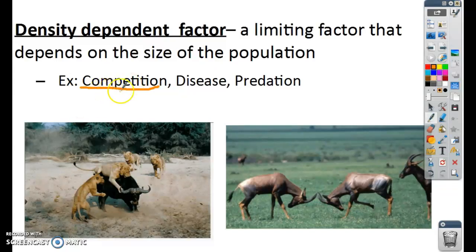So the amount of competition depends on how great the density is or how big the population is. With disease, think about it. If we have 100 people in a room, all tightly packed together, and one person has the flu, how fast do you think that flu is going to spread? Pretty fast, right? Now, if I just have one or two people in that room, it's probably not going to spread as fast. So when we get big populations, diseases spread a lot quicker.